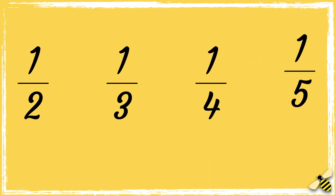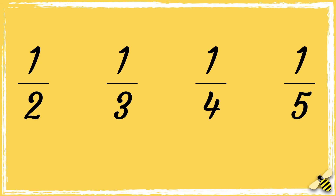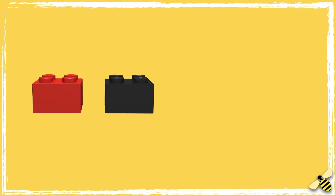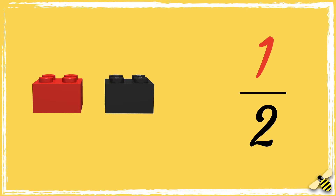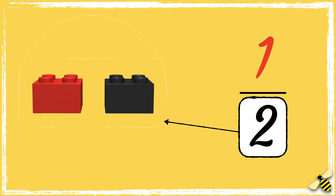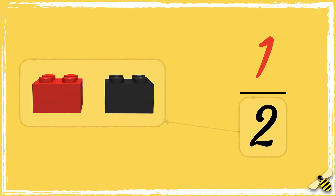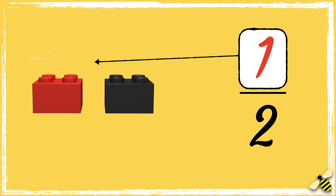Now we're going to learn how to read and write fractions. Here are two bricks. What if half of these bricks were red? There are two bricks altogether and one of them is red. This is what a fraction looks like for one half. The bottom number is the whole amount, which in this case is two bricks. This is called the denominator.